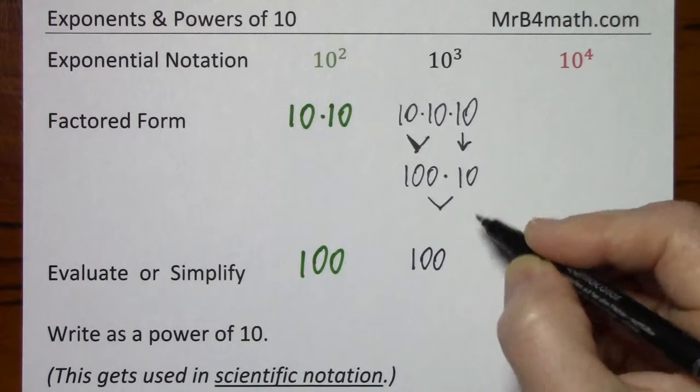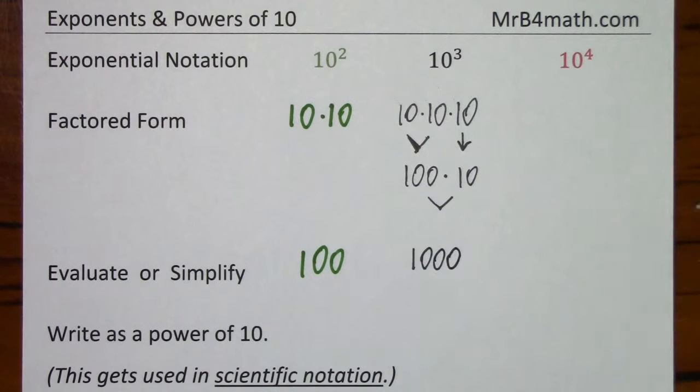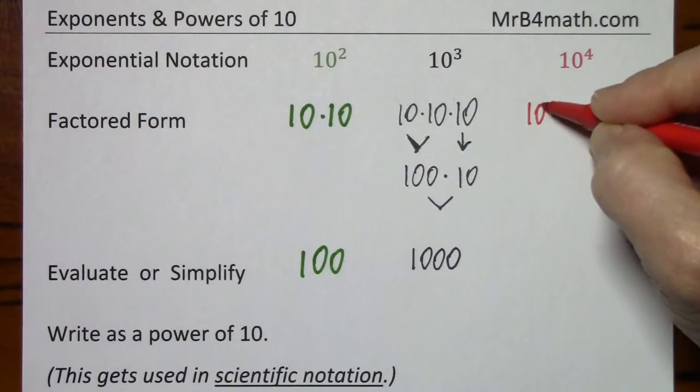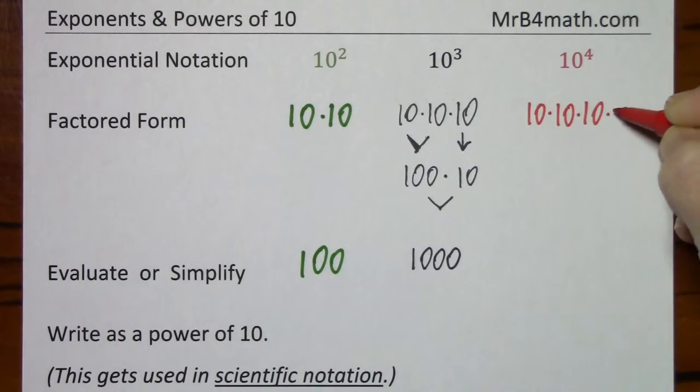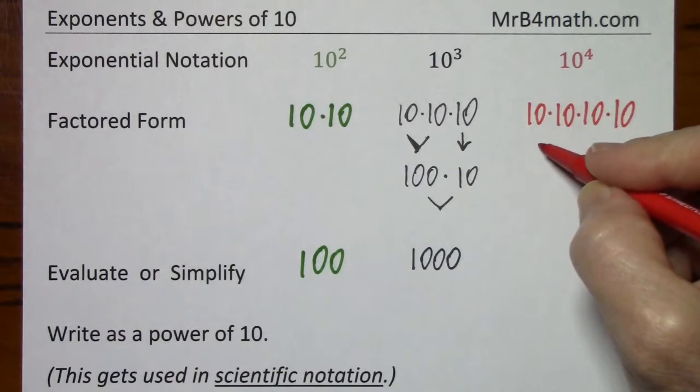And when you multiply by 10, you tack on another 0 for the answer. And finally, for 10 to the 4th in factored form, multiplying this out.